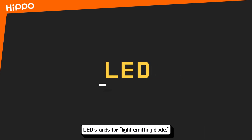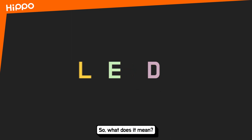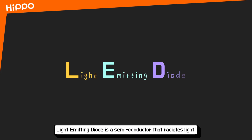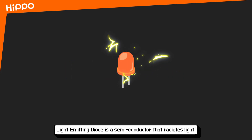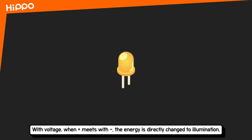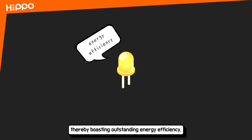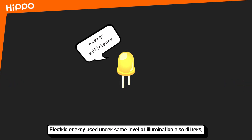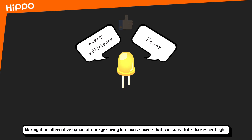LED stands for Light Emitting Diode. A Light Emitting Diode is a semiconductor that radiates light. When voltage is applied, the energy is directly converted to illumination, thereby boosting outstanding energy efficiency. Electric energy use under the same level of illumination also differs, making it an energy-saving luminous source that can substitute for sunlight.